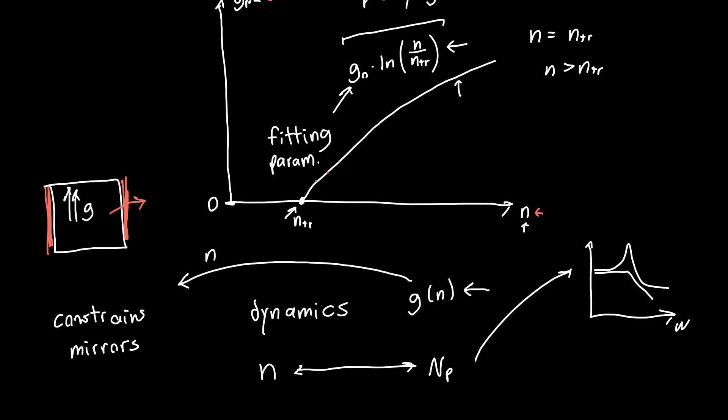This also tells us for a given carrier density, this constrains the mirrors that you can use. So if you have super lossy mirrors, so say you've got some cavity and you've got super lossy mirrors on either side, so almost all of the photons escape, then you're going to need a really high gain inside this cavity in order to compensate for all of these photons being lost. And this equation roughly tells you what carrier density you need for a given mirror loss, and you can calculate that, and we will in future videos.